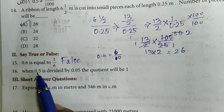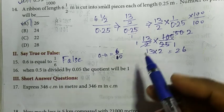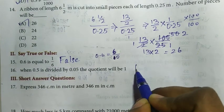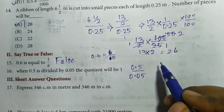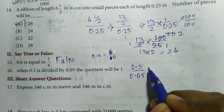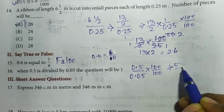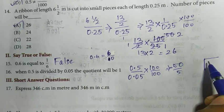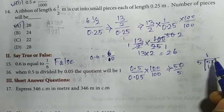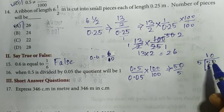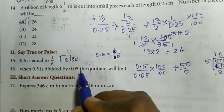16th question: when 0.5 is divided by 0.05, the quotient will be 1. To convert the decimals to whole numbers, multiply both by 100 to get 50 by 5. Dividing 50 by 5 gives a quotient of 10. So the given statement is false.